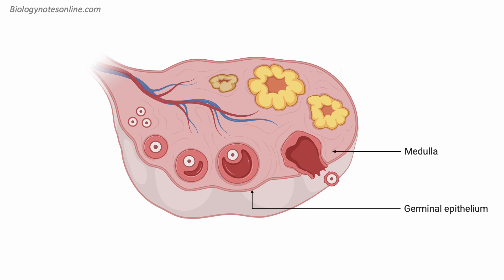These follicles are like houses for developing eggs. We start with the primary follicle, the earliest stage of development. Inside, we find an immature egg cell called an oocyte. This oocyte is surrounded by a layer of cells called granulosa cells, which provide nourishment. As the follicle matures, it becomes a secondary follicle. The granulosa cells continue to multiply, and a fluid-filled cavity called the antrum begins to form.